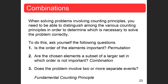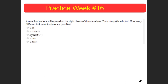When solving problems involving counting principles, you need to distinguish among them. Ask yourself: Is the order of the elements important? If so, it's a permutation. Are the chosen elements a subset of a larger set where order is not important? That's a combination. Does the problem involve two or more separate events? Then it's just the fundamental counting principle. Let's take a look at a problem from our homework.